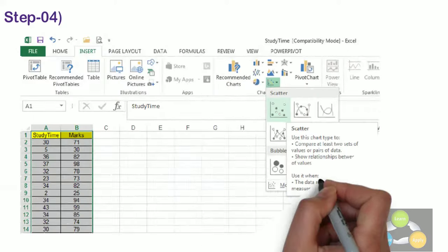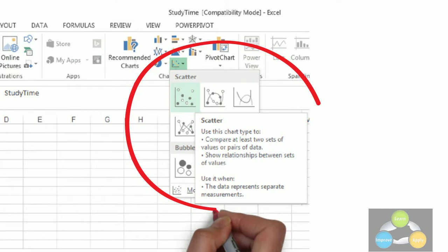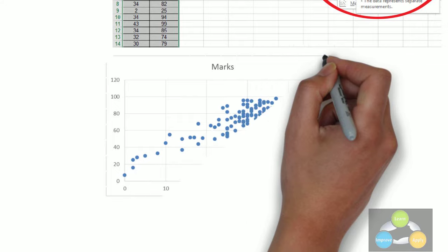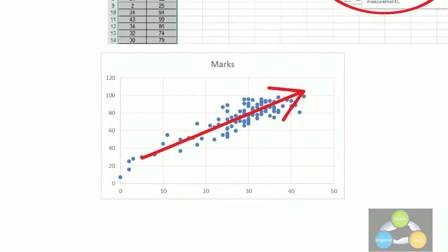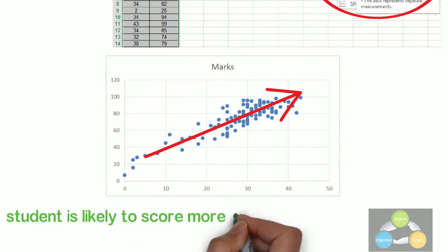Step 4. Select the scatter chart type and you will get the scatter diagram as below. We can see that a student is likely to score more marks if he or she studies more.